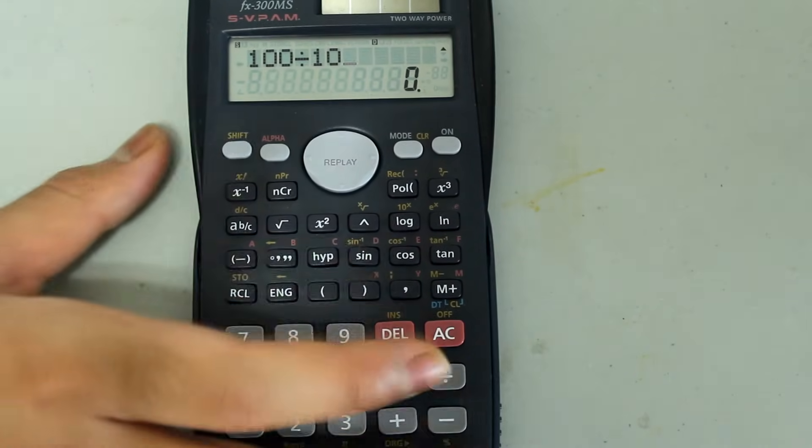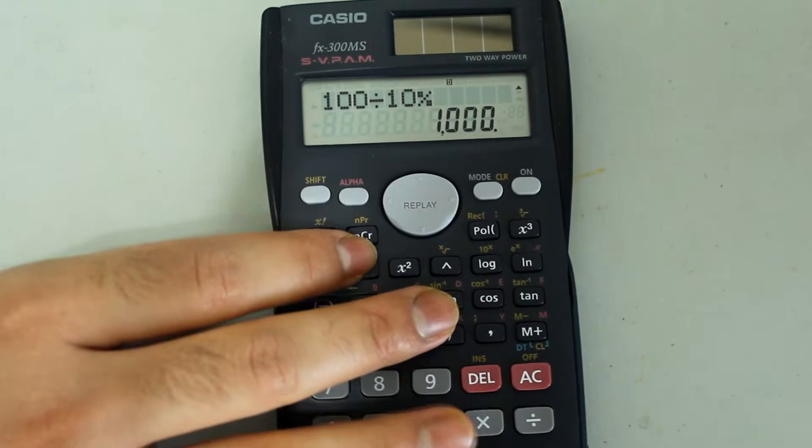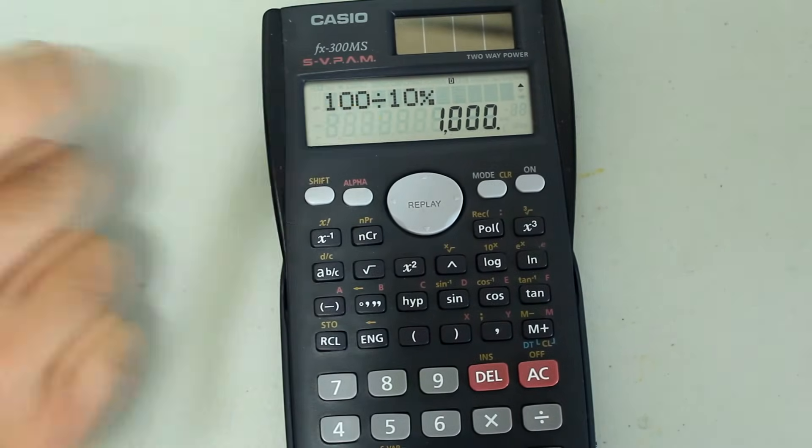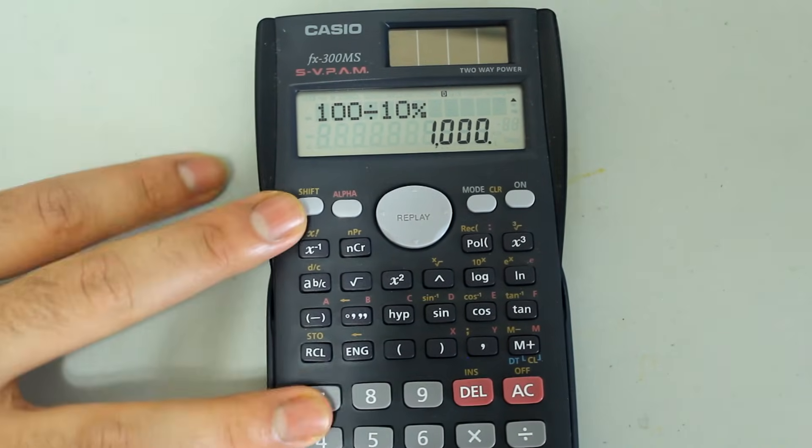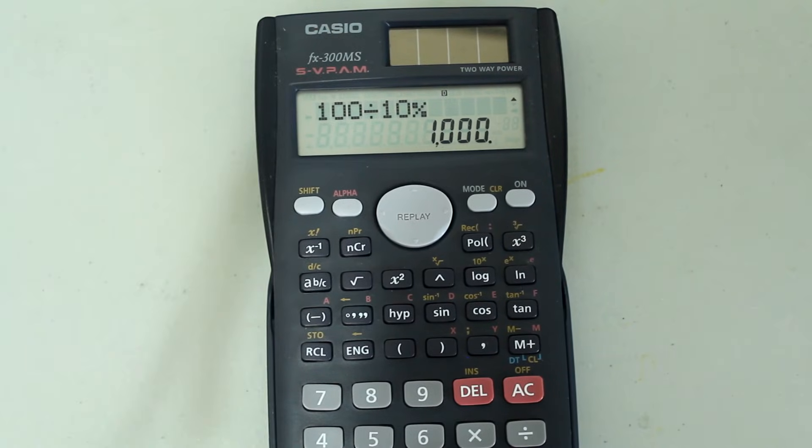Press Shift again and the equals sign to choose percentage. And you get the answer: 1,000, which means that 100 is 10% of 1,000.